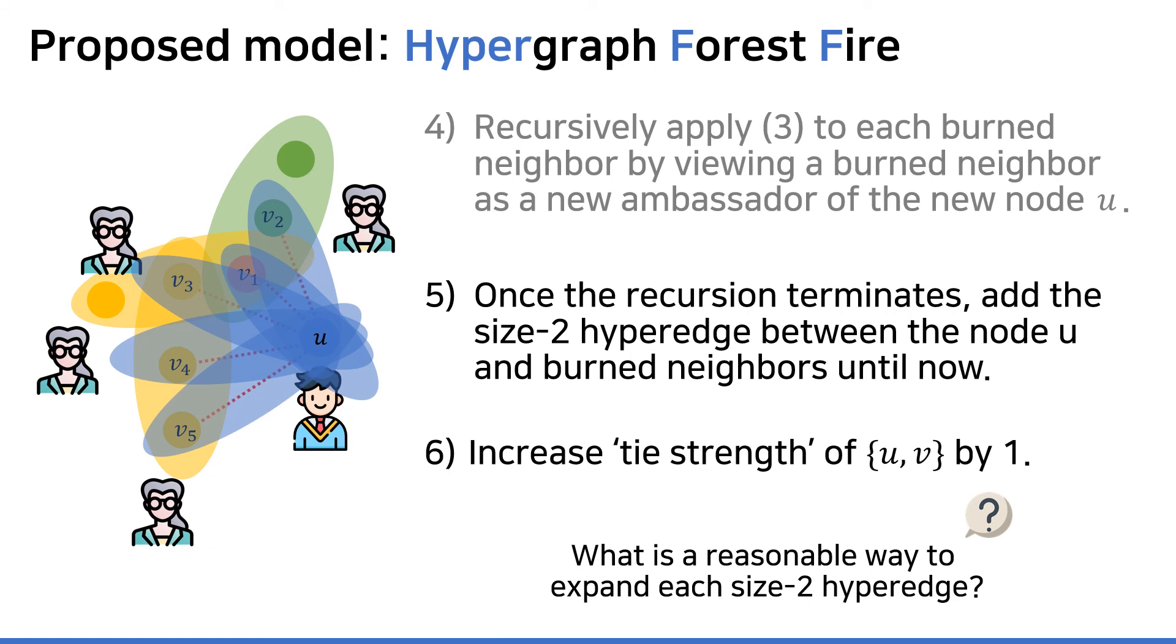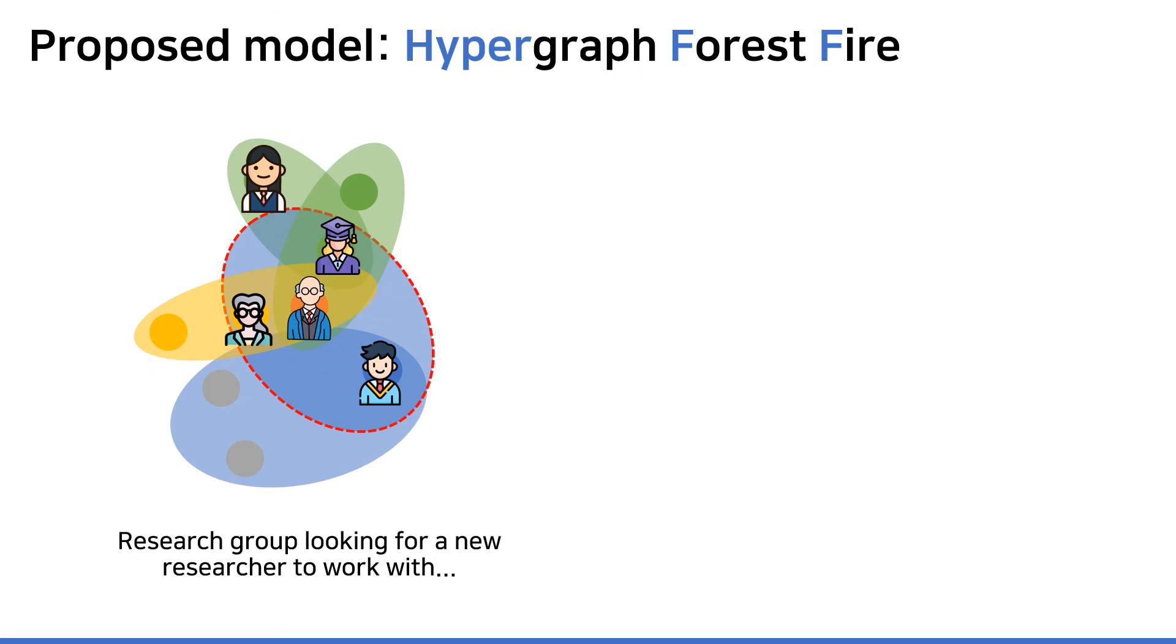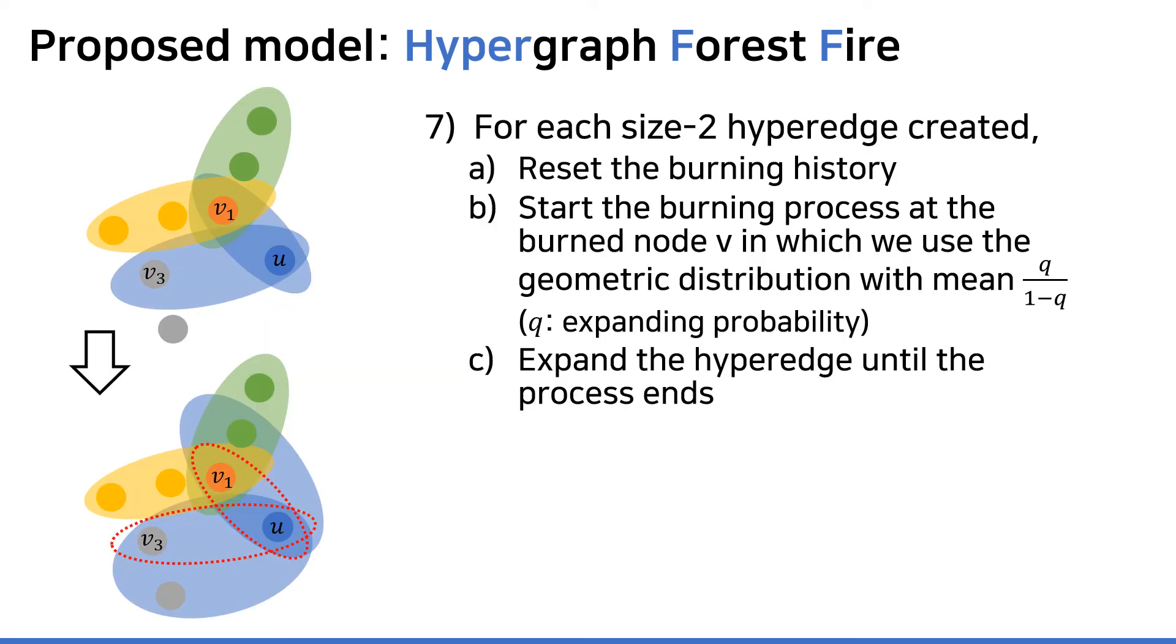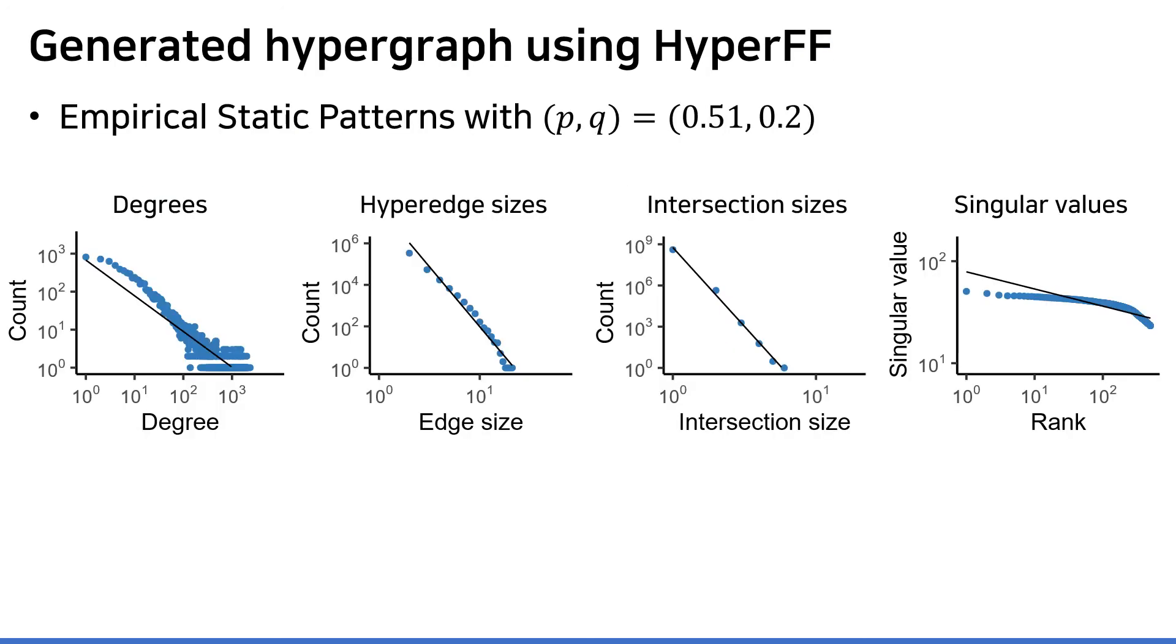Now that we have size 2 interaction between nodes, we somehow need to expand these edges to express higher-order interactions. What is a plausible way to do so? Suppose a research group which corresponds to a hyperedge was looking for a new fellow to work together. In this case, a referral in this group is likely to introduce his or her colleagues who the referral has worked with several times before rather than just a totally new person. So after hyperedge expansion, the result would be like this. The model encodes this mechanism once again through the forest fire scheme with the parameter called expanding probability q. By viewing the new incoming node as a new ambassador, the forest fire once again spreads out. The intensity of the spread also can be controlled by the expanding probability q.